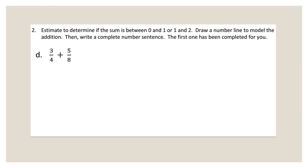Let's start by cubing the directions for the next problem set. It says: estimate to determine if the sum is between zero and one, or one and two; draw a number line to model the addition; then write a complete number sentence. So our action words are: estimate, draw, and write. We have to estimate to see if the sum is between zero and one or one and two — and remember, sum always means we're going to add. Then we have to draw a number line to model the addition and write a complete number sentence.